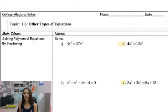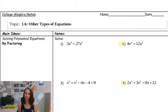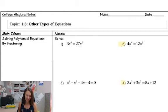Hey class, today we're going to be looking at section 1.6 in College Algebra. We are going to talk about how to solve other types of equations than what we've seen before. We're going to look at polynomial equations with degrees higher than 2, mostly degree 3 and degree 4s today. And then we are also going to look at how to solve square root equations and absolute value equations. So let's get started with some polynomials.